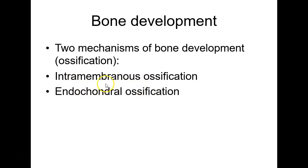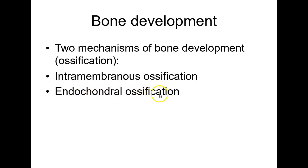Both of these types of ossification start out with stem cells. The question is: did the stem cell go straight into osteoblasts, like it does in the flat bones of the skull — that would be intramembranous ossification — or did the stem cells become chondroblasts? In that case, you make a little cartilage model of the bone to be.